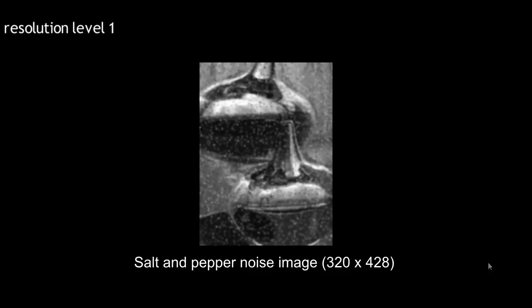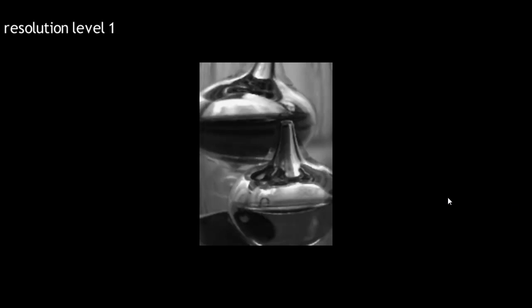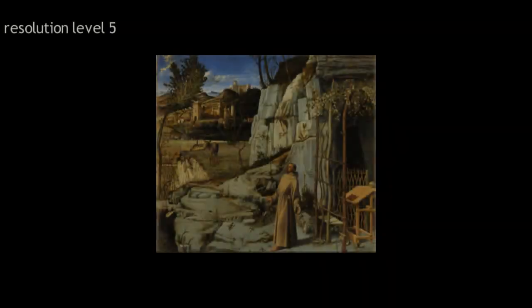The final nonlinear image operations we want to illustrate are smooth local histogram filters such as median or mode filters. We first illustrate median filtering on a salt and pepper noise image. Using a 3x3 median filter in pyramid level 1, we are able to completely remove the salt and pepper noise.